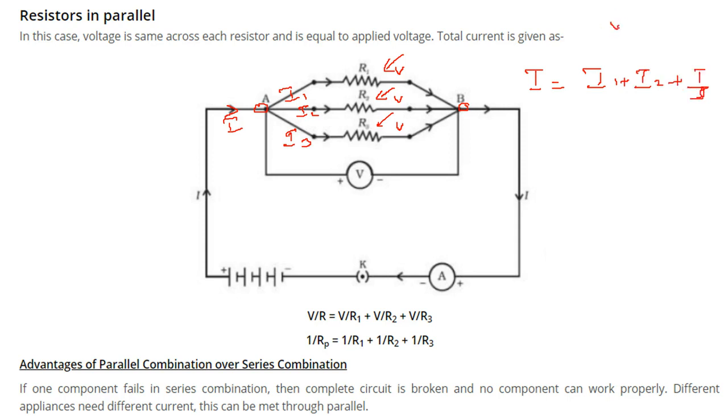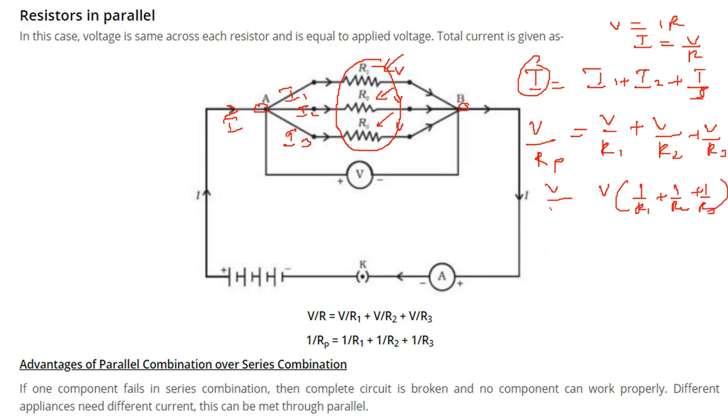Now we know that V = IR is the Ohm's law. So I can be written as V/R. Let us take I = V/R. Let us say this R is the resultant, so we write Rp. What is the final resistance because of these three resistances which are in parallel? I is V/R1. Now V remains same. This is V/R2 and this is V/R3. Now take V outside: 1/R1 + 1/R2 + 1/R3. This is V/Rp. V gets cancelled. So this 1/Rp is nothing but 1/R1 + 1/R2 + 1/R3. This is the resistance in parallel.